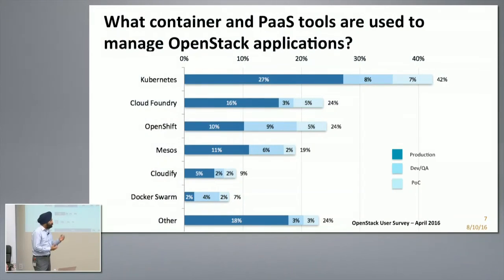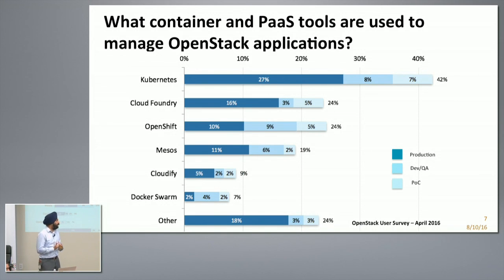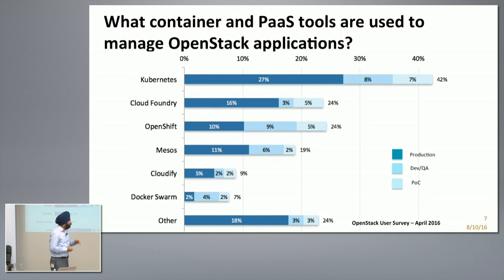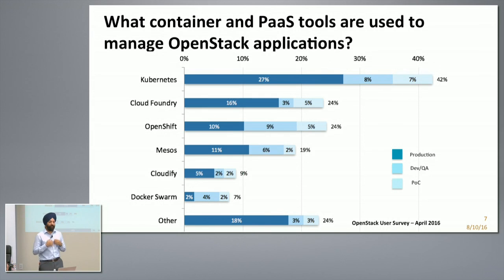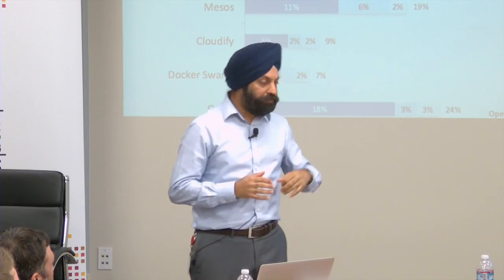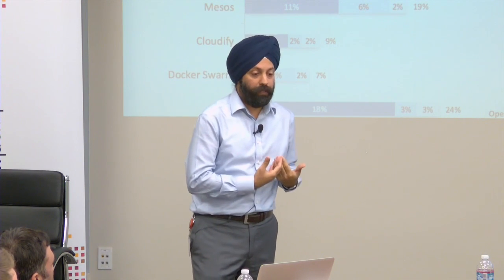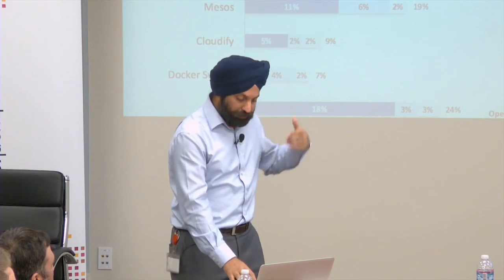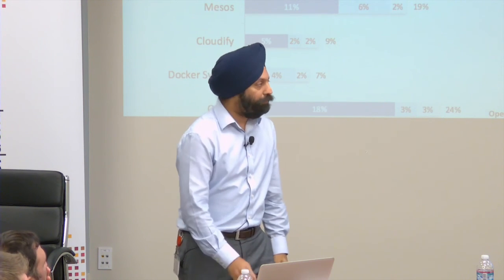Here's a survey done at OpenStack Austin showing what container tools people are using to manage applications on top of OpenStack. Kubernetes is at the top, followed by Cloud Foundry, OpenShift, and Mesos. Even OpenShift, the PaaS developed by Red Hat, is also based on Kubernetes. There's quite a bit of momentum with Kubernetes — it's backed by Google, who has used this technology for years. This is consistent with what we've seen with customers, though we've seen a fair mix of all, and we are supporting all of them.